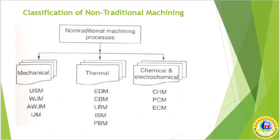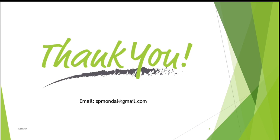Different energies are used for different machining processes. For mechanical processes there are ultrasonic machining, WJM (water jet machining), and AWJM (abrasive water jet machining). For thermal processes there are EDM (electro discharge machining), EBM (electron beam machining), LBM (laser beam machining), and IBM (ion beam machining). Other processes include chemical and electrochemical: CHM (chemical machining), PCM (photochemical machining), and ECM (electrochemical machining). This is a brief introduction to non-traditional machining processes.